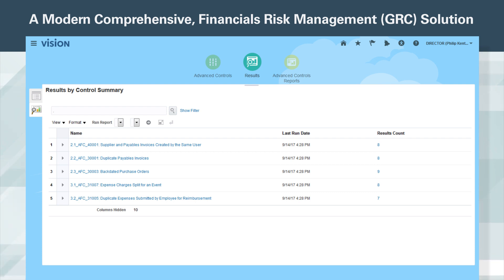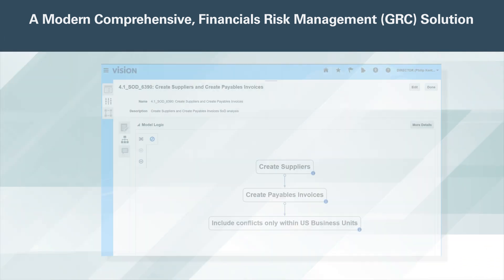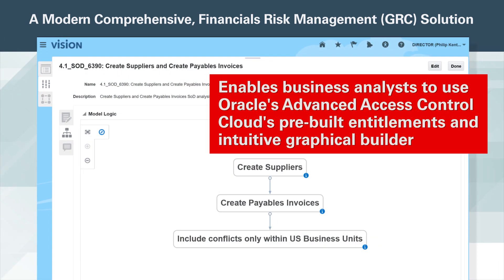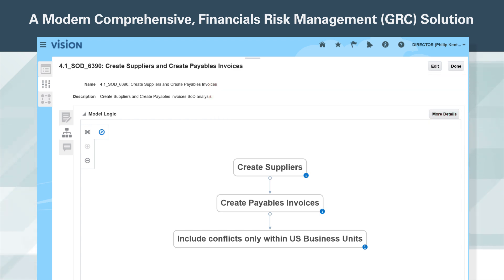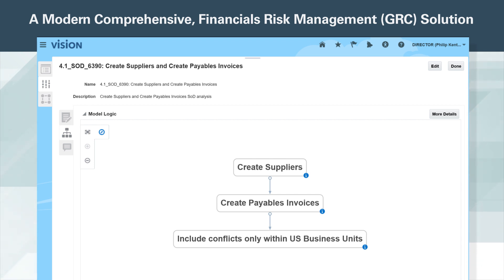Organizations often need to evolve their controls in response to regulatory changes, acquisitions, or new risk exposure. Oracle Risk Management Cloud enables business analysts to use Oracle's Advanced Access Control Cloud's pre-built entitlements and intuitive graphical builder to rapidly create a model to monitor a new acquisition, eliminating obsolete coarse-grain spreadsheet-based monitoring. Spreadsheet monitoring methods typically take days to complete and do not satisfy audit requirements because they are incomplete and inaccurate.